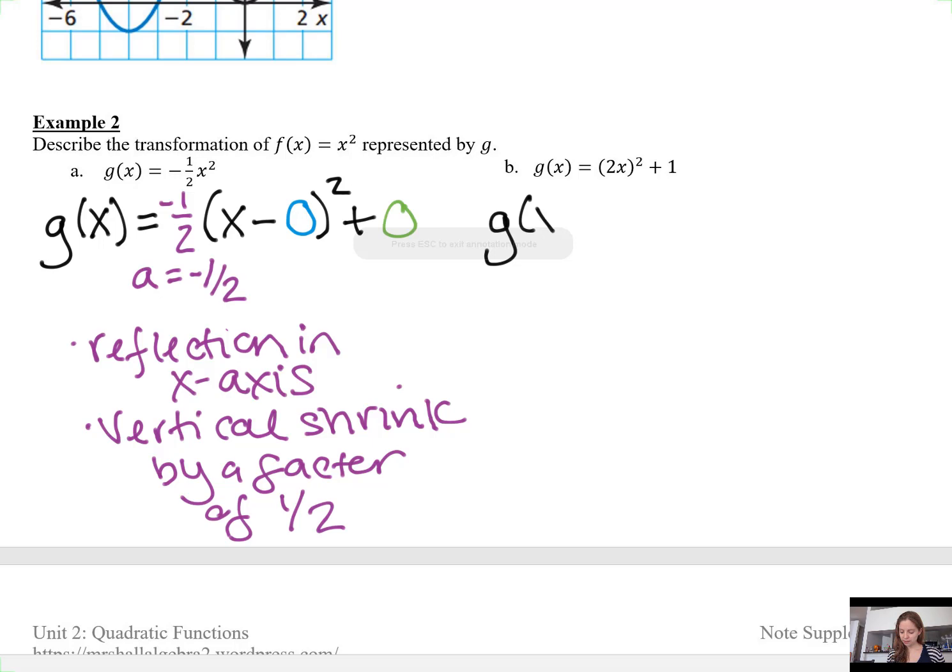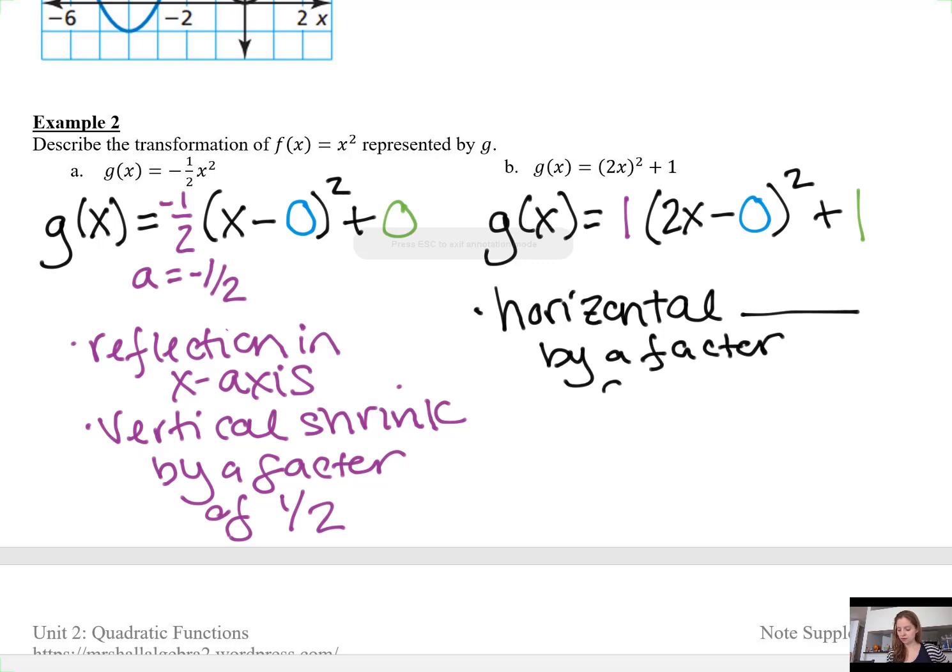In b, we have g(x) = (2x)² + 1. Nothing up front. I am subtracting nothing. I am adding 1. So how am I going to deal with that 2? There are two ways to deal with this 2. One is to say that there has been a horizontal shrink by a factor of 1/2.